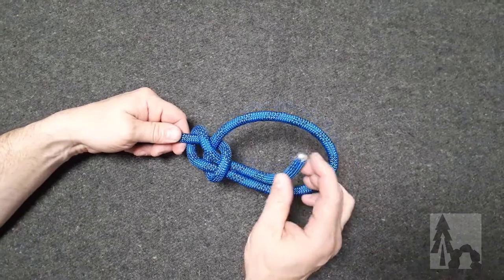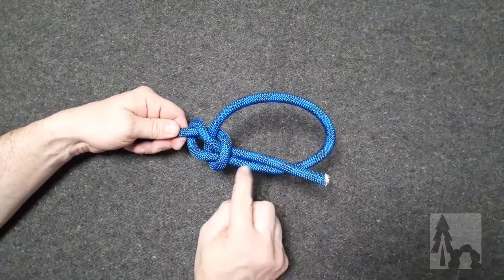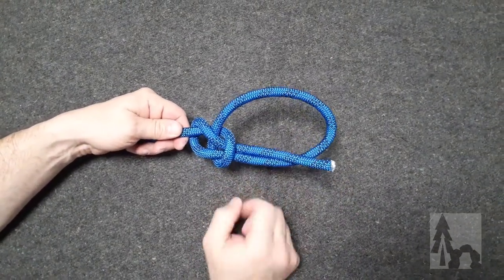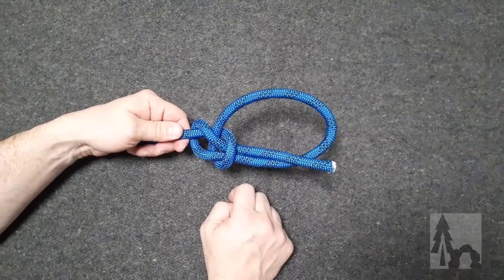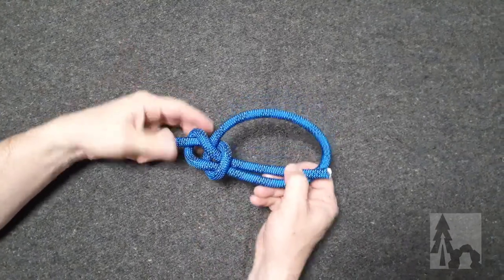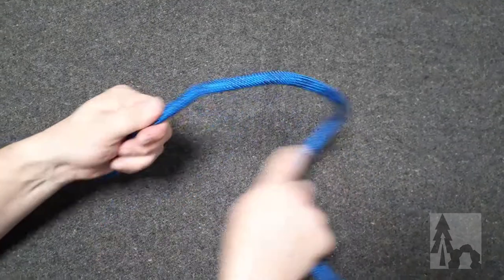If I had a little bit longer free end, I could tie an overhand stopper knot or a half hitch around that limb of the loop so it wouldn't collapse. That's your basic bowline with the little story.